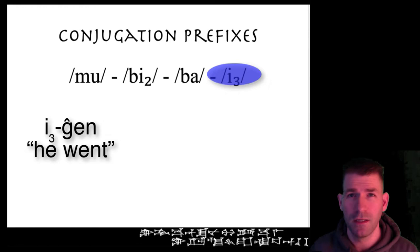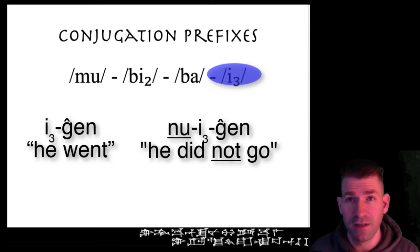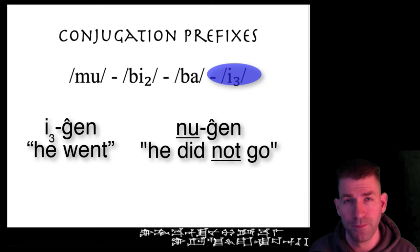However, because the e₃ appears after the nu, the e₃ will be assimilated into the nu, resulting in the final form nu-gen.